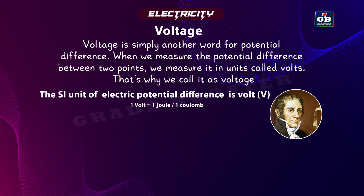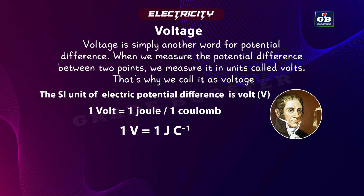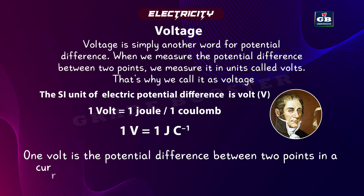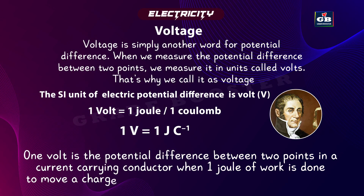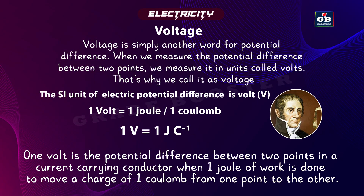One volt is equal to one joule per one coulomb — one V equals one J·C⁻¹. So one volt is the potential difference between two points in a current-carrying conductor when one joule of work is done to move a charge of one coulomb from one point to the other.